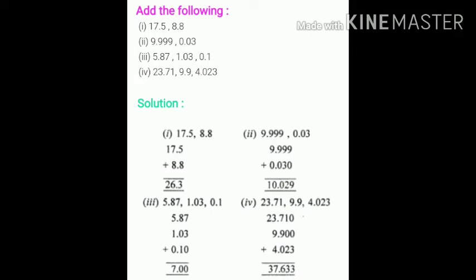17.5 and 8.8 gives 26.3. Second number question: 9.999 plus 0.03 gives 10.029. That is how you have to do rest of the sums.